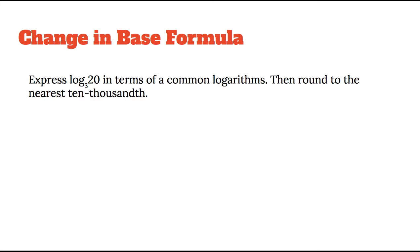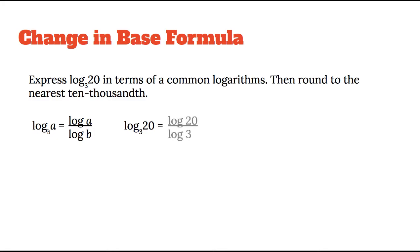Next, the change of base formula. Log base B of A is equal to log of A divided by log of B. If you've got a base other than 10 — for example, base 3 — you can rewrite it as the log of the current number divided by the log of the base. So log base 3 of 20 becomes log of 20 divided by log of 3 — that's log base 3 of 20 in common log form.